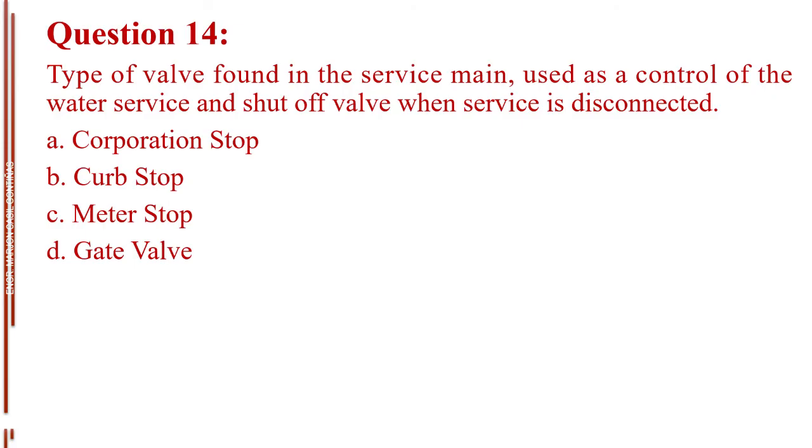Question number 14. Type of valve found in the service main, used as a control of the water service, and shut off valve when service is disconnected. A. Corporation stop. B. Curb stop. C. Meter stop. D. Gate valve. The answer is Letter A, corporation stop.